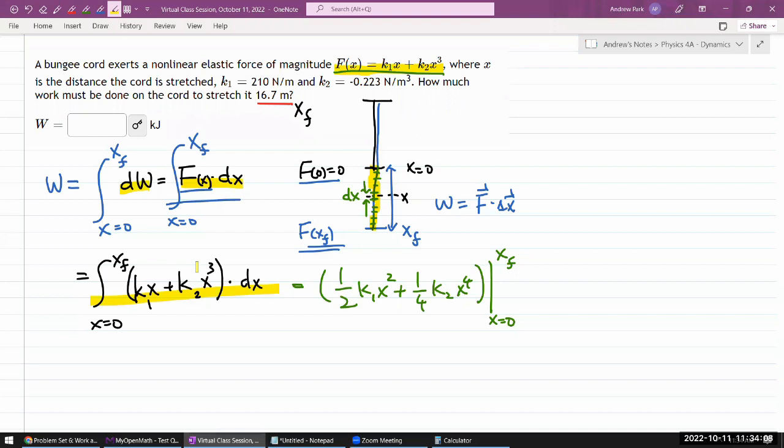So, yeah, I have done the integral, hopefully correctly. And when I plug in the number, it should be, and, you know, zero will just give me zero. So it's going to be one half K1 X final squared plus one fourth K2 X final to the fourth power. So, yeah, just calculate it and that should give me the right answer.